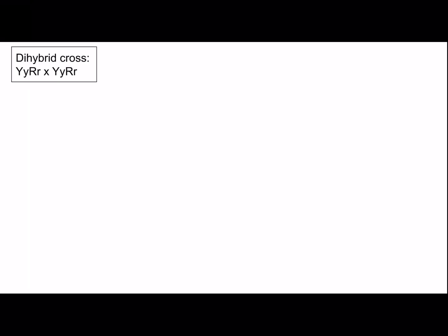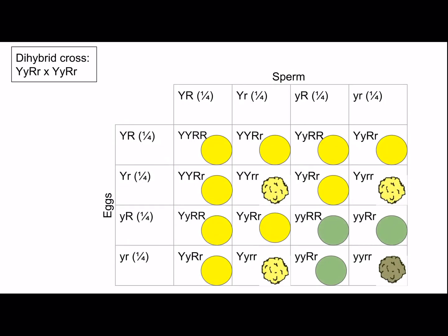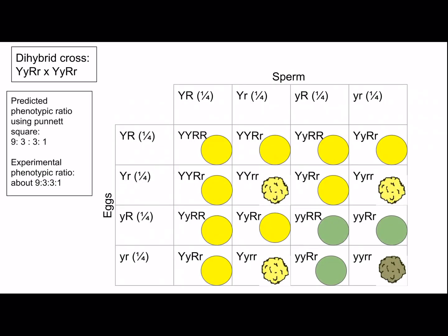This is a dihybrid cross, something similar to what Mendel might have done. The law of independent assortment means the traits are not inherited together, so we have a one-fourth chance of each gamete combination shown at the top and side for sperm and eggs. Adding in the phenotypes, the predicted phenotypic ratio using the Punnett square is nine to three to three to one. The experimental phenotypic ratio is about the same, confirming that these two traits are inherited independently of one another.